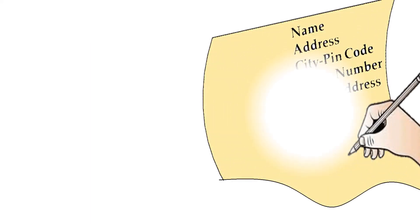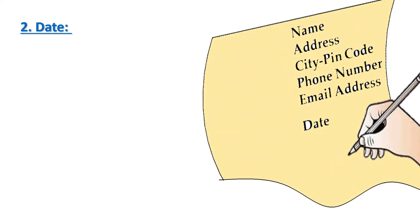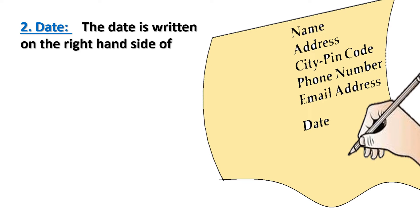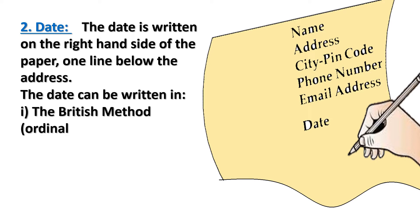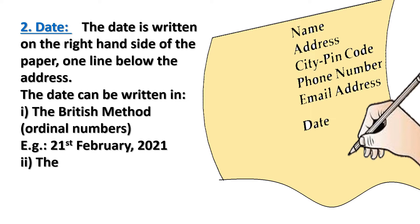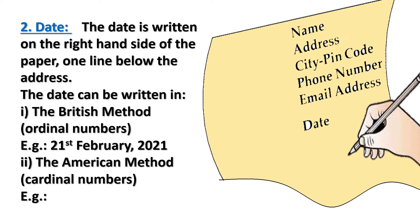The second element of the job application letter is the date. Date is written on the right hand side of the paper, one line below the address. Date can be written in the British method, that is ordinal numbers — for example, 21st February 2021 — or in the American method, that is cardinal numbers — for example, February 21, 2021. British method has date first then month, and American method has month first then date.